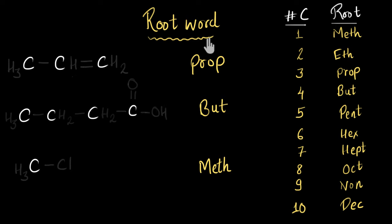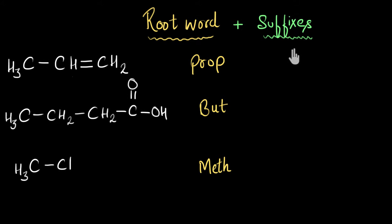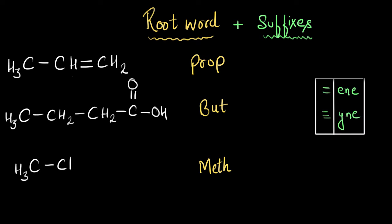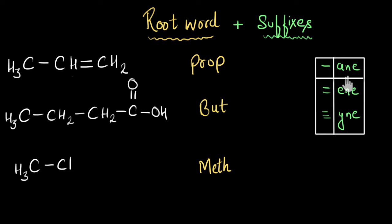One side note: the root word actually refers to the number of carbon atoms present in the longest carbon chain. In this video, we are only talking about carbon compounds which have one single carbon chain with no branching, so multiple carbon chains cannot be formed. We will talk about the longest carbon chain rule in future videos. Now let's talk about suffixes. These are words attached to our root word to denote the presence of a few functional groups. If we have a double bond in our carbon chain, that means our carbon chain belongs to the alkene family, and to denote the presence of a double bond we attach the suffix '-ene'. If there is a triple bond, we attach the suffix '-yne'. And if neither double nor triple bonds are present, the chain belongs to the alkane family and we attach the suffix '-ane'.